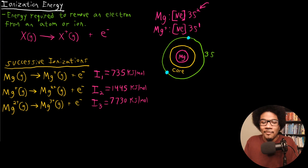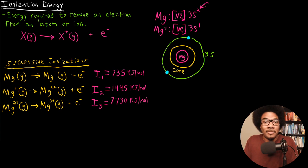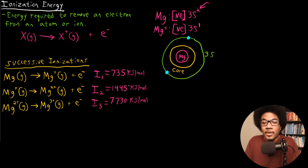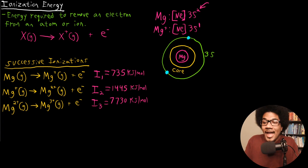The analogy people like to use involves money: if you lose a little bit of money, you're going to hold on to what you have left a little bit tighter. If you have $1,000 and spend $500, you'll hold on to that $500 tighter. The same thing happens with atoms — as they start to lose electrons, they use Coulombic attraction to hold on to the remaining ones tighter. That accounts for the jump in ionization energy from neutral magnesium to the magnesium cation.